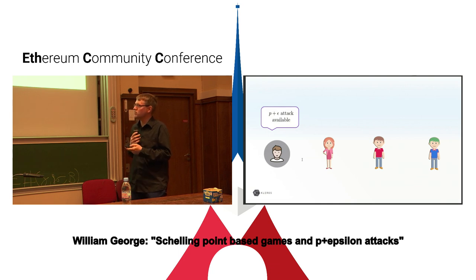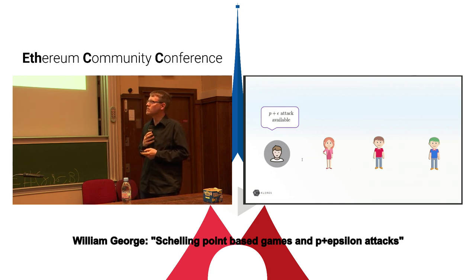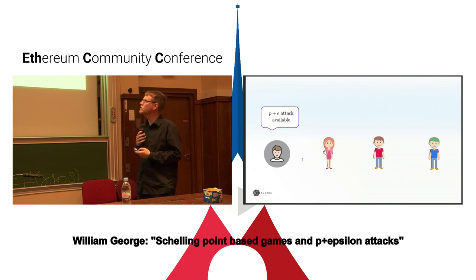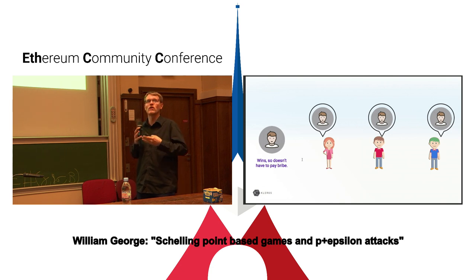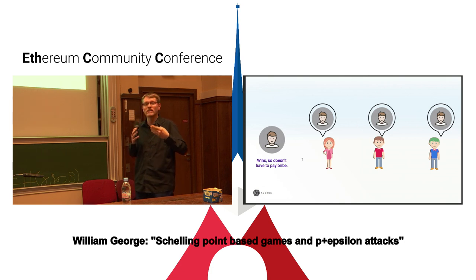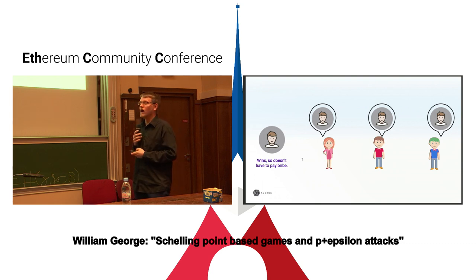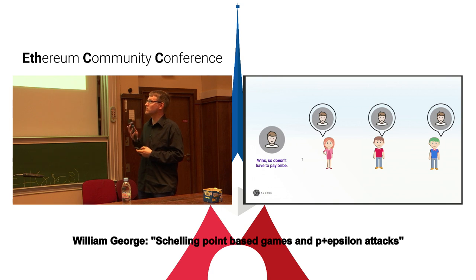To illustrate: Bob announces a P-plus-epsilon attack and makes a smart contract committing to that bribe. Everybody thinks voting for Bob is now a dominant strategy, so everybody votes for Bob — and Bob doesn't pay the bribe. Bob managed to change the outcome without actually paying anyone anything.